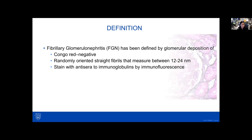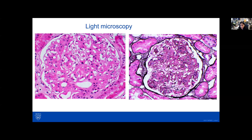By description, fibrillary glomerulonephritis on pathology is characterized by predominantly glomerular involvement, with abundant deposition with a pale eosinophilic appearance. It is PAS variable and silver negative, as seen here.